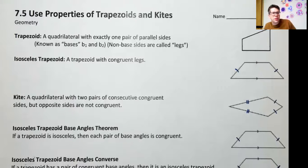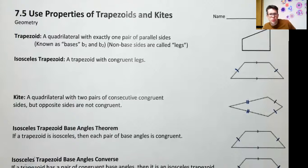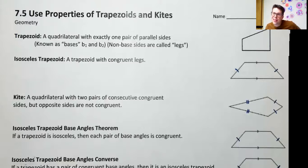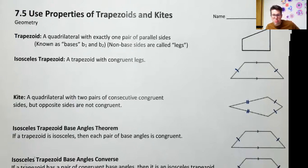Howdy everybody. Today we're going to talk about section 7.5, which is to use properties of trapezoids and kites. These are our last two four-sided quadrilateral shapes, and the reason we've saved them for last is because they are not parallelograms. So everything else we've done so far has been based off the idea of a parallelogram — these ones are not.